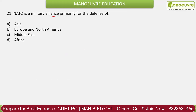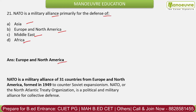Question 21: NATO is a military alliance primarily for the defense of? Options: Asia, Europe and North America, Middle East, Africa. The correct answer is Europe and North America. NATO stands for North Atlantic Treaty Organization. It consists of 31 countries from Europe and North America, formed in 1949. Sweden has also joined, making it 32 countries. NATO was created to counter the Soviet Union.